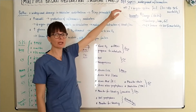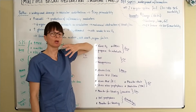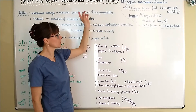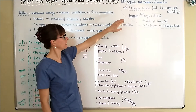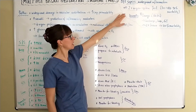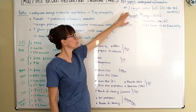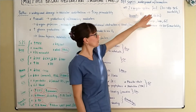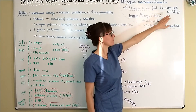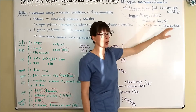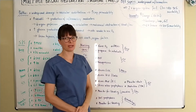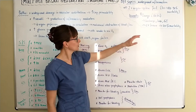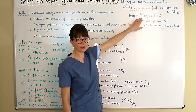In sepsis we have widespread inflammation in the body that leads to massive vasodilation. Because we have multiple organs that fail, MODS is defined as two or more organ systems that fail. But if three or more organ systems fail, the patient has a mortality rate of 80 to 90 percent, which is really high.